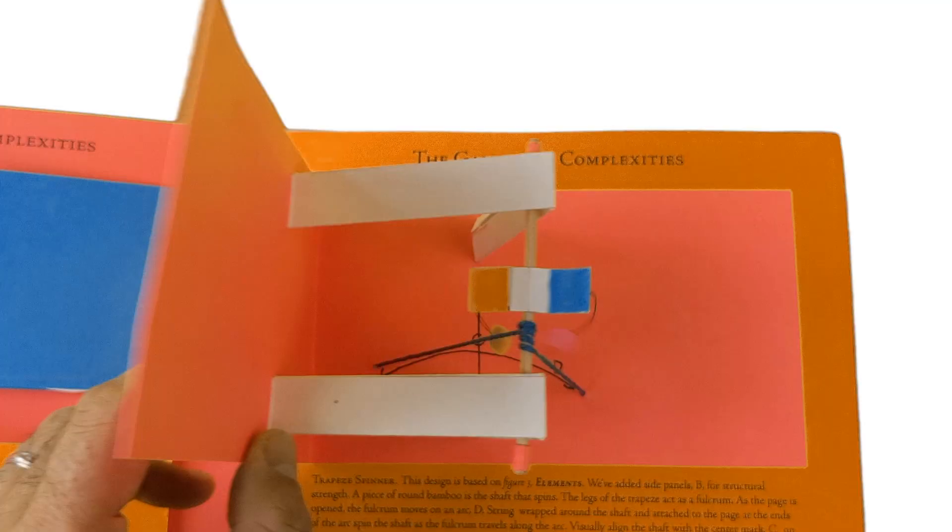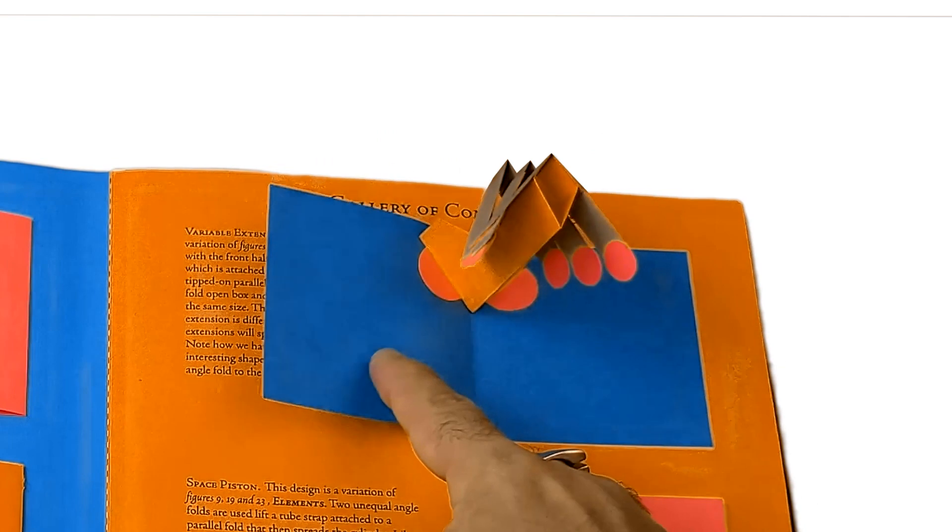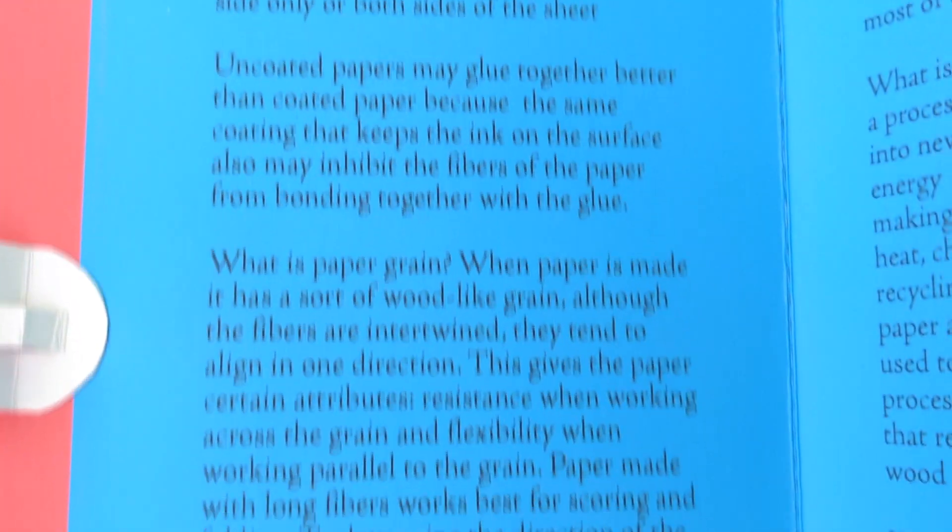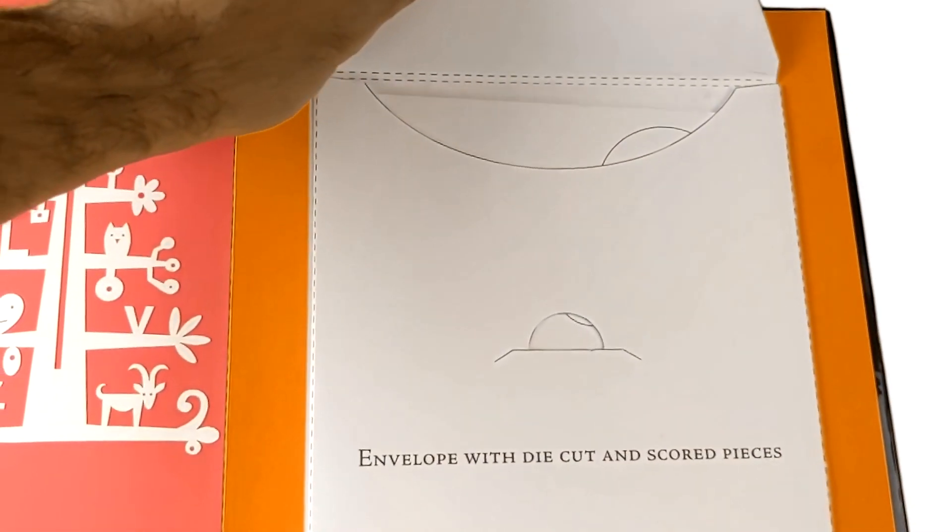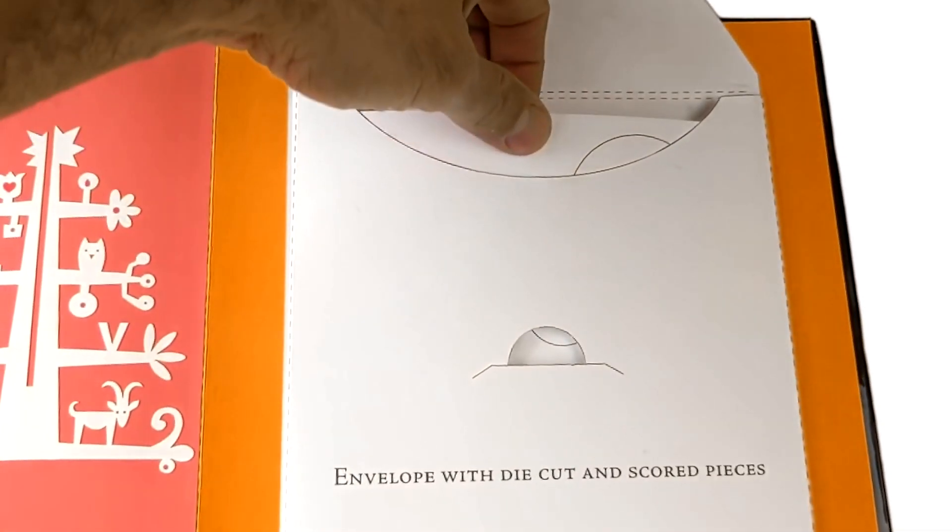The Complexities of Pop-Up includes 22 new pop-up designs, essays on the quality and history of paper, traditional versus laser die cutting, and also comes with printed and scored components to build six of the pop-ups.